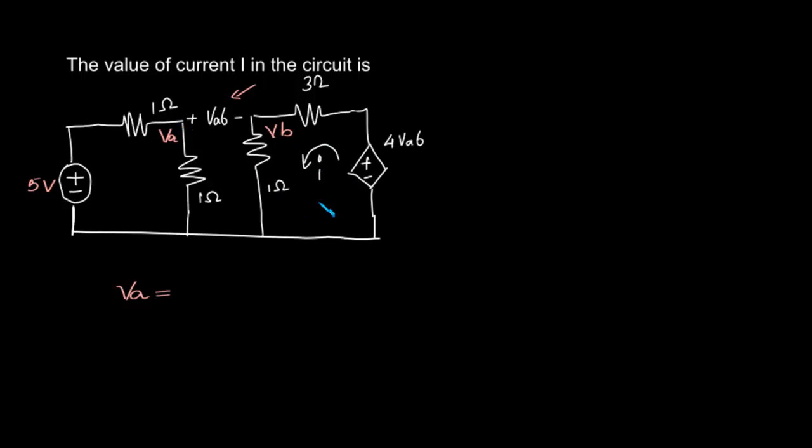From this relation we will find out what is the current. Let's see how we can do this. For VA, we can apply voltage division rule.